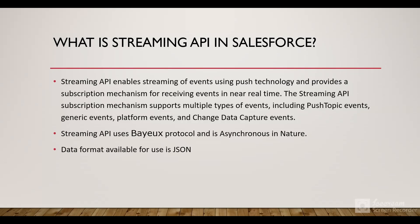Streaming API is based on the publisher-subscriber model, where the client publishes the event and the subscriber subscribes to that event through a channel. A channel would be created, and the subscriber would subscribe to that channel and receive notifications related to any record changes. Streaming API is asynchronous in nature and the format used is JSON.